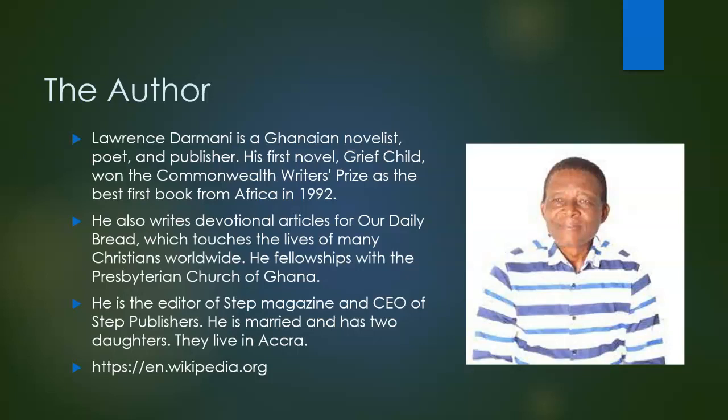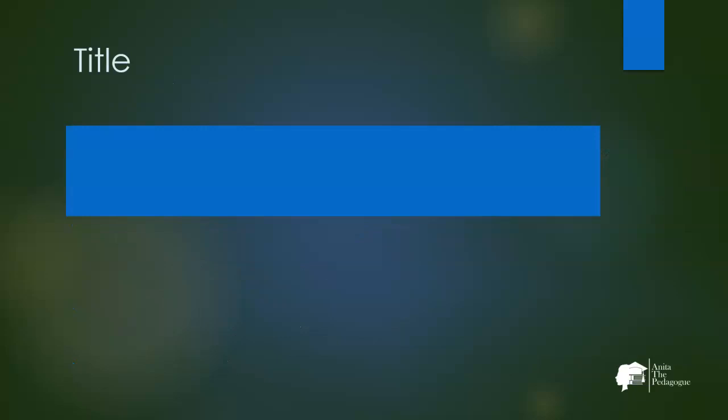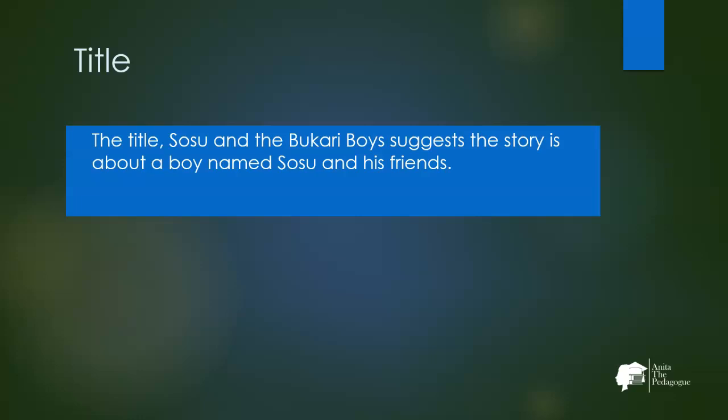He is the editor of Step Magazine and CEO of Step Publishers. He is married and has two daughters, and they live in Accra, Ghana. The title 'Sosu and the Bukhari Boys' suggests the story is about a person called Sosu — a young boy or student — and his friends, because we see 'Bukhari Boys,' so probably his friends.